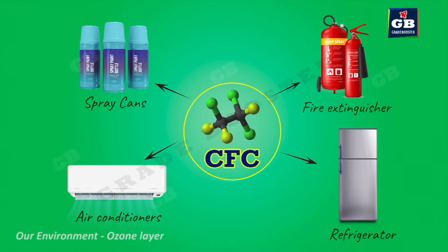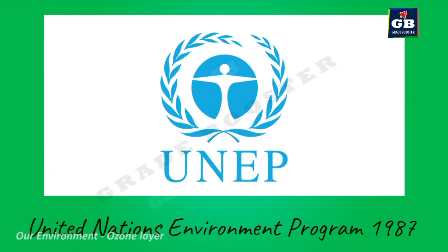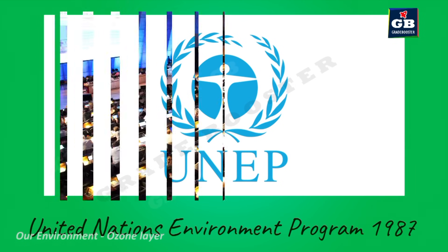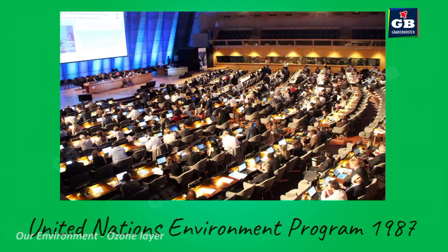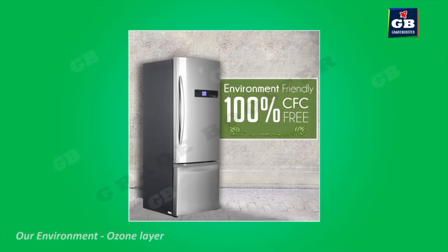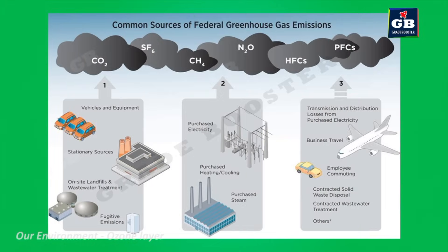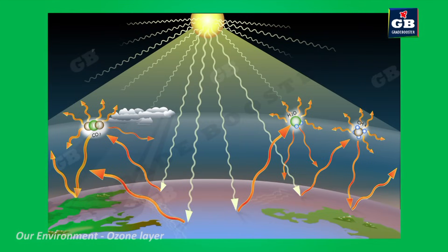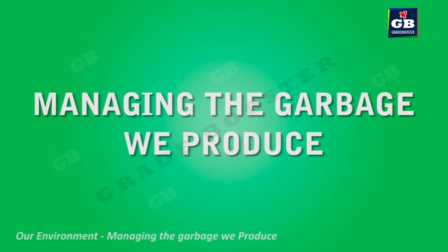CFCs are used in the manufacture of ACs, refrigerators, fire extinguishers, and spray cans. In 1987, the United Nations Environment Programme (UNEP) made an agreement with all countries to stop the usage of CFCs. It is now mandatory that no company in the world can manufacture refrigerators with CFCs. Nearly a hundred types of gases contribute to ozone depletion, so reducing the use of such gases helps protect the ozone layer.